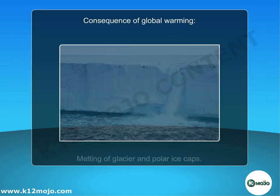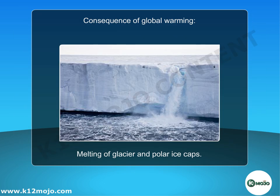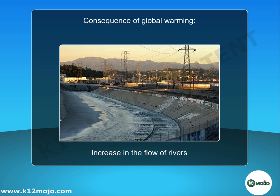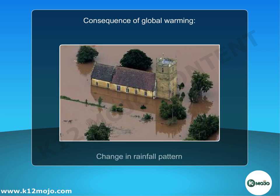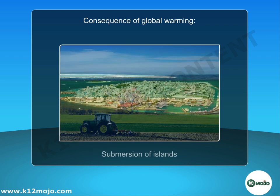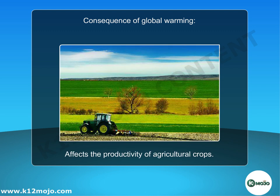Consequences of global warming: melting of glaciers and polar ice caps, flooding of low-lying coastal plains, increase in the flow of rivers, change in rainfall patterns, submersion of islands, and destruction of crops.